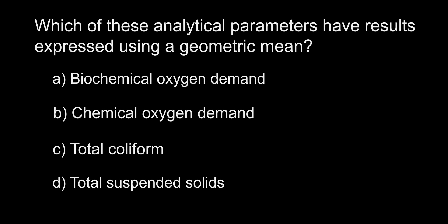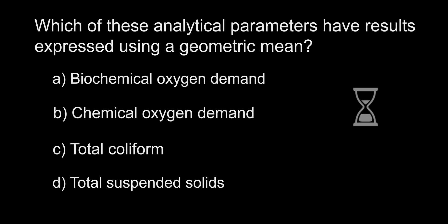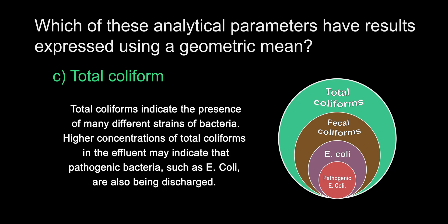Which of these analytical parameters have results expressed using a geometric mean? A. Biochemical oxygen demand. B. Chemical oxygen demand. C. Total coliform. D. Total suspended solids. The answer is C. Total coliform.